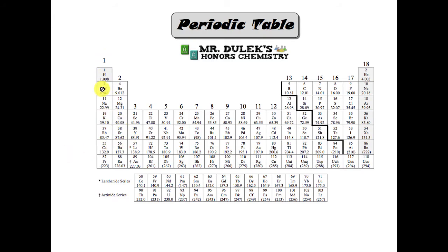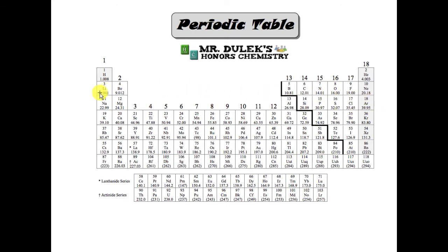A group trend goes up and down on the periodic table — for example, looking at what happens with the alkali metals, whether the atom gets bigger or smaller as you move down. A periodic trend means going from left to right on the periodic table — for example, how sodium, magnesium, aluminum, and silicon change in atomic radius or ionization energy. In this video we'll introduce those two types of trends.